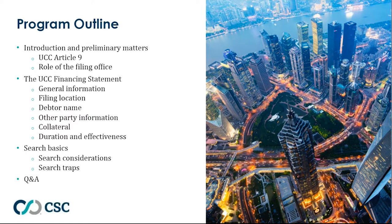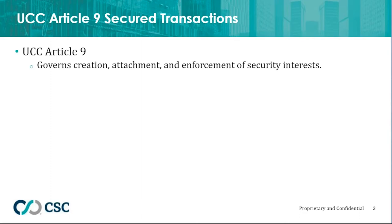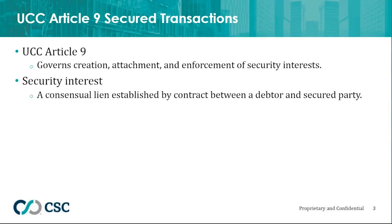First, some basic concepts. We're talking about filing and searching of UCC records under UCC Article 9, which governs security interests. A security interest is a type of lien — a consensual lien that arises voluntarily by contract between a debtor and a secured party, whereby the debtor grants a secured party an interest in the debtor's assets in exchange for some benefit, such as a loan. This is a benefit for the secured party because if the debtor does not fulfill their obligation, the secured party has the pledged assets they can look to in order to pay the outstanding obligation. It's a great way of reducing risk.